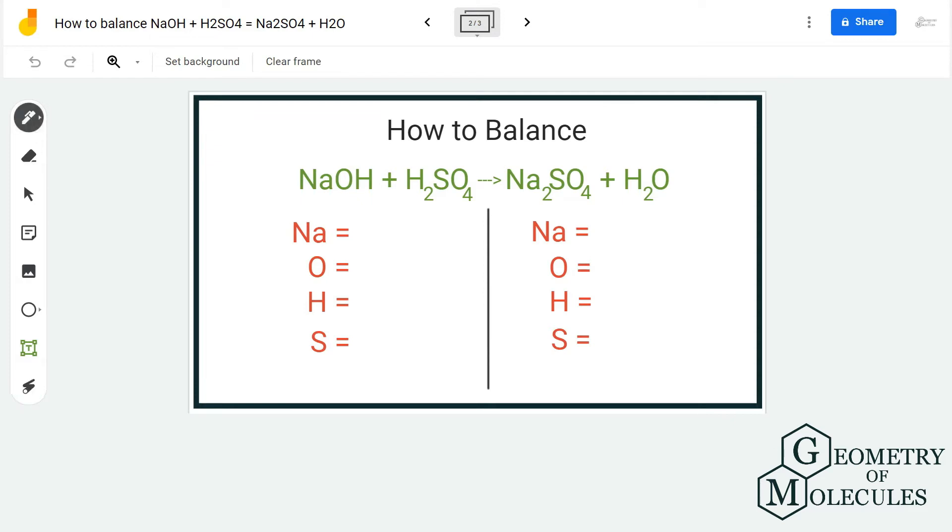Here for reactant side, we have one atom of sodium. For oxygen we have 1 plus 4, which makes it 5. Hydrogen we have 1 plus 2 here, so it makes it 3, and we only have one atom of sulfur.